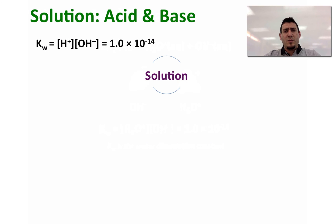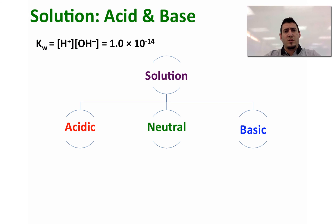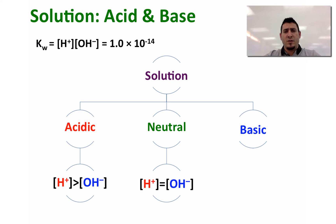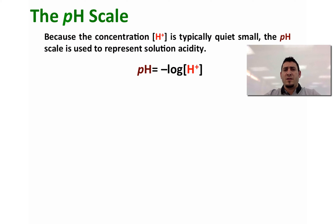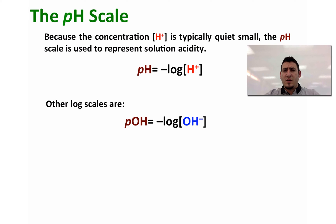Aqueous solutions can be classified as acidic, basic, or neutral. Solutions are acidic when the concentration of H⁺ is higher than the concentration of OH⁻, neutral when both concentrations are equal, and basic when the concentration of OH⁻ is higher than the concentration of H⁺. Because the concentration of H⁺ is typically quite small, the pH scale is used to represent solution acidity. pH is given by: pH = −log₁₀[H⁺]. Other log scales include pOH = −log₁₀[OH⁻] and pK = −log(K), where K is the equilibrium constant.